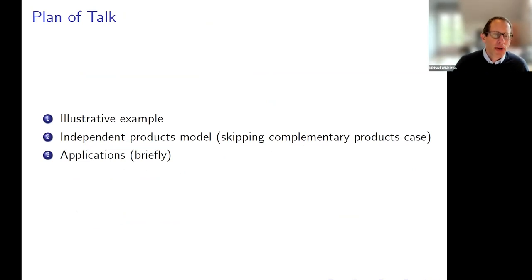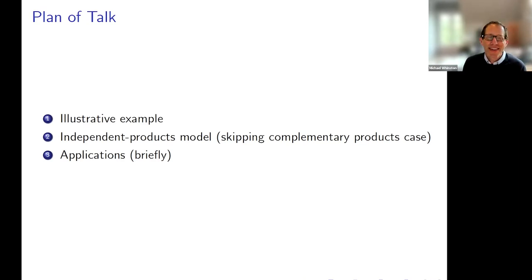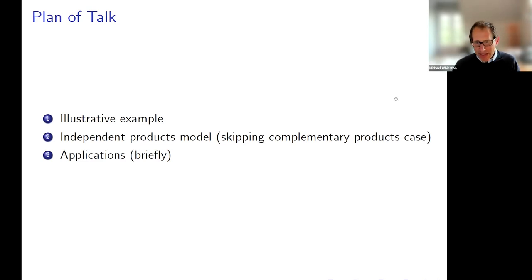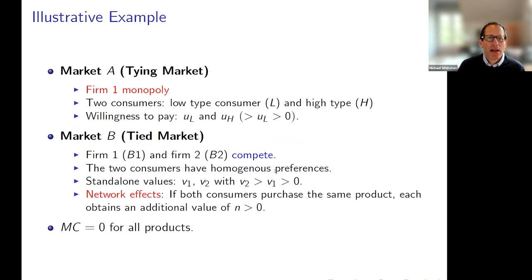So what's the plan for the talk? First, I'm going to talk about a simple example that illustrates the mechanism — it really gives the basic idea of the paper. I'm then going to describe, without going into details of proofs, the more general model of independent products. I'll skip the complementary products case — just one slide that tells you what we do for that — and then briefly talk about applications. I have about 25 minutes to do that.